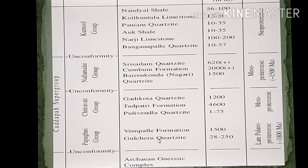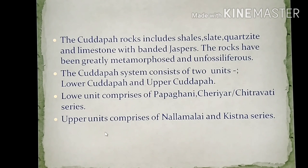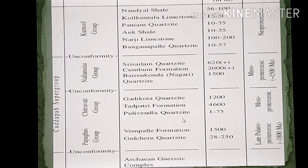The formations include Gulcheru Quartzite followed by Vempali formation in Papagani. Then in Chitravati or Chedaya, you have Pulivendala Quartzite, Tadipatri formation, and Galikota Quartzite. Then with a prominent unconformity you have Nallamalaya, which is made up of Bairenkonda Quartzite, Cumbum formation, and Srisailam Quartzite. Papagani was deposited during the late Paleo-Proterozoic, Chitravati in the Meso-Proterozoic, and Kistana in the Neo-Proterozoic.